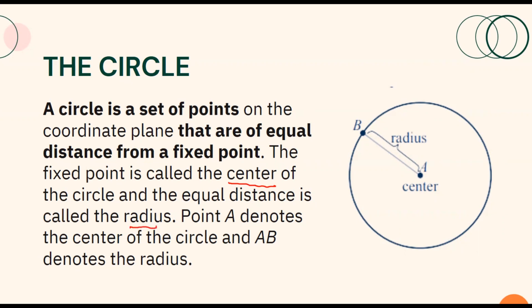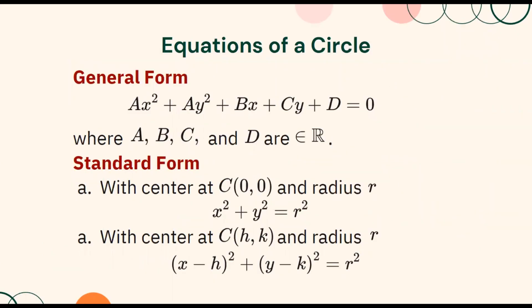Point A here denotes the center of the circle and segment AB denotes the radius. An equation of a circle can be written in general and in standard form. The general form of the equation of a circle is given by ax squared plus ay squared plus bx plus cy plus d equals 0, where a, b, c, d are elements of real numbers. Remember that we can say that an equation represents a circle if the numerical coefficients of x squared and y squared are equal.